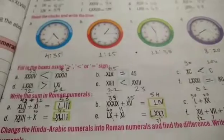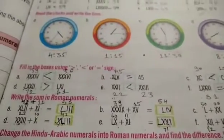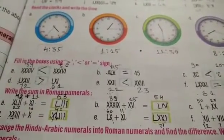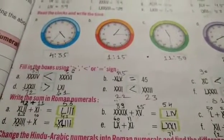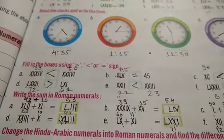Take out your classwork copy. Leave one line. Write page number 25, Exercise 3A, Question number 5. Write the sum in Roman numerals. And copy down part A.